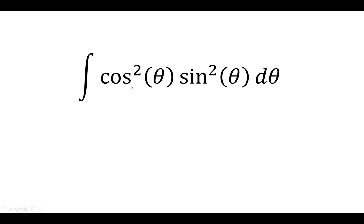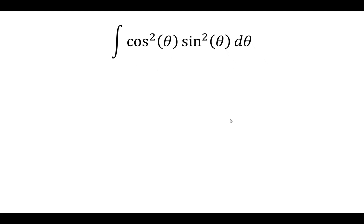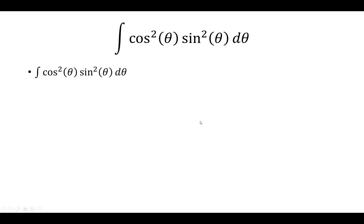In this video, we want to find the integral of cosine squared times sine squared. The way we're going to solve this is by making a substitution. We know that sine squared plus cosine squared is equal to 1, so if we solve for cosine squared, we get cosine squared is 1 minus sine squared.